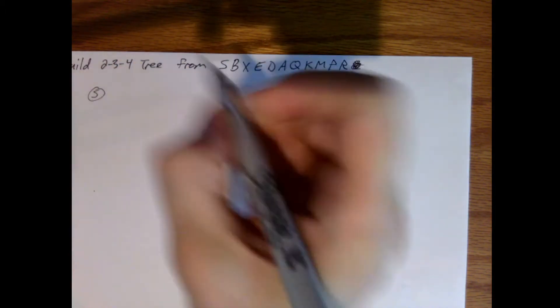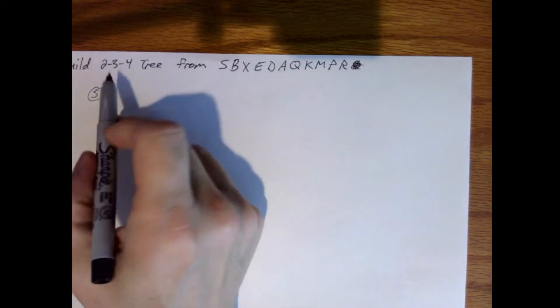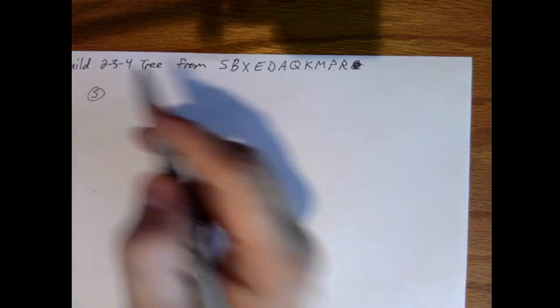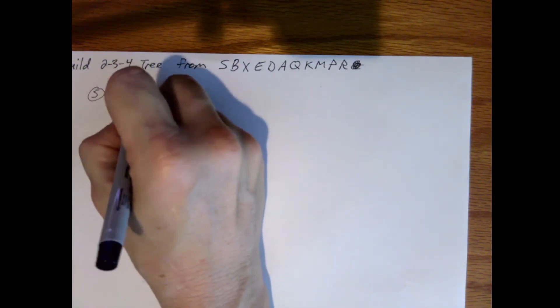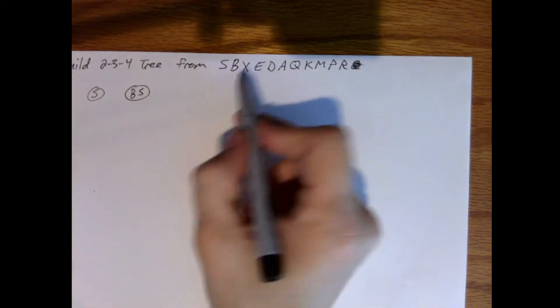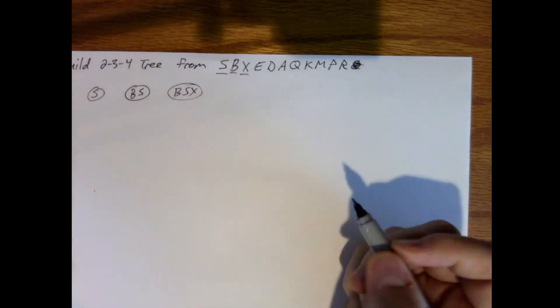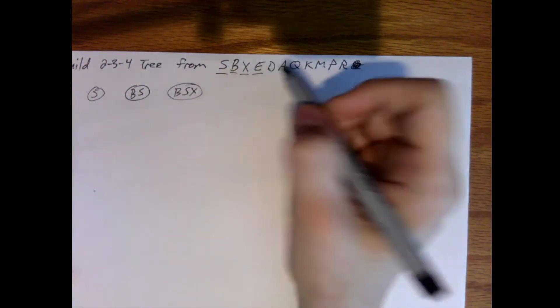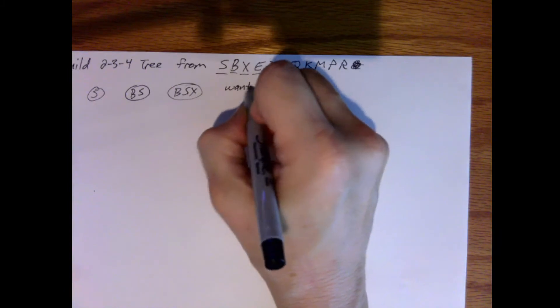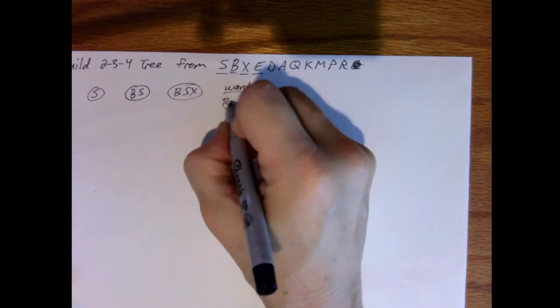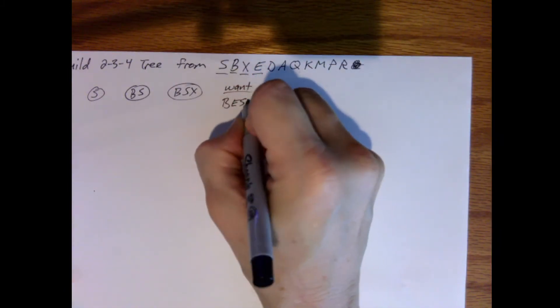So first we would have S, then we add B to this. There's only one key, and we can have at most three keys. So then we get B, S, add the X. B, S, X. And then we want to add E. So here's what I want: B, E, S, X.